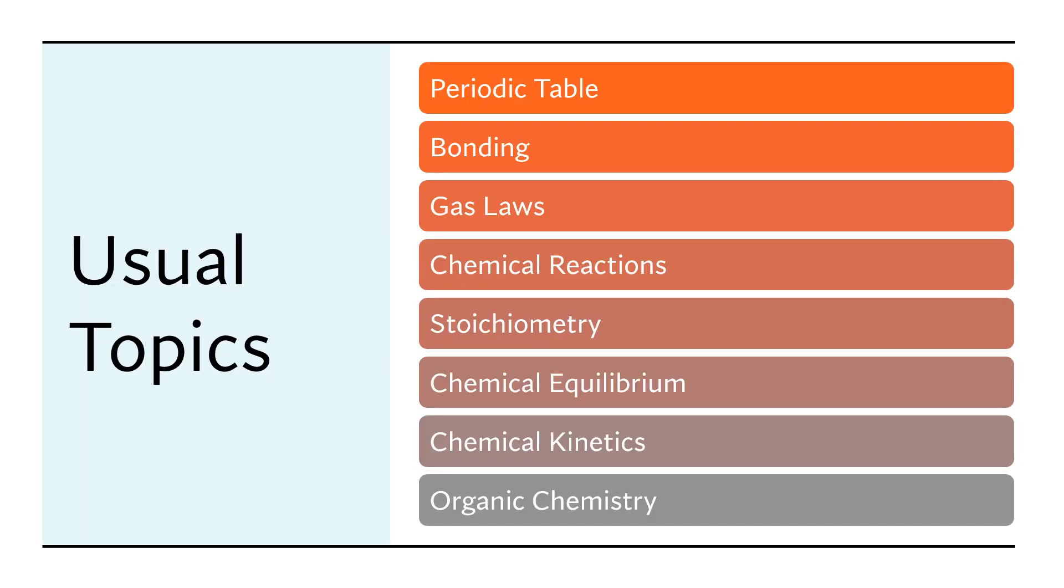Here you see the usual topics in high school chemistry. And we're going to go through some of the subtopics here, but let me just read them. Periodic table, bonding, gas laws, chemical reactions, stoichiometry, chemical equilibrium, kinetics, and organic chemistry.